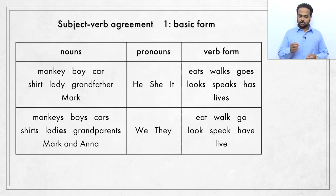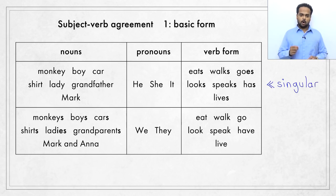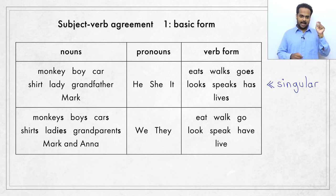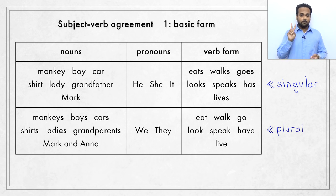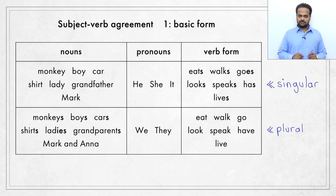Here's a table that shows you this pattern. The first row has singular nouns and the singular pronouns he, she, and it — so the verbs are all in singular form with an S added to the end. In the second row, we see plural nouns along with the two plural pronouns we and they, so the verbs are all in plural form without the S.